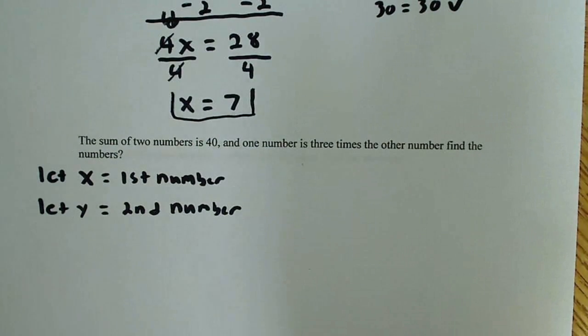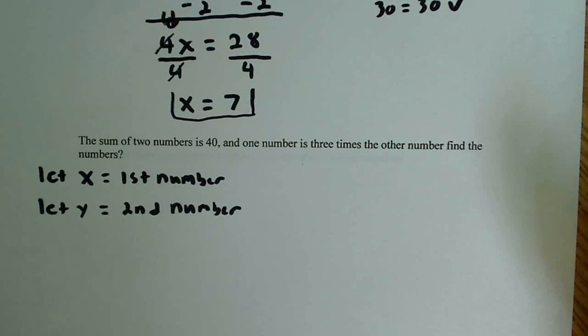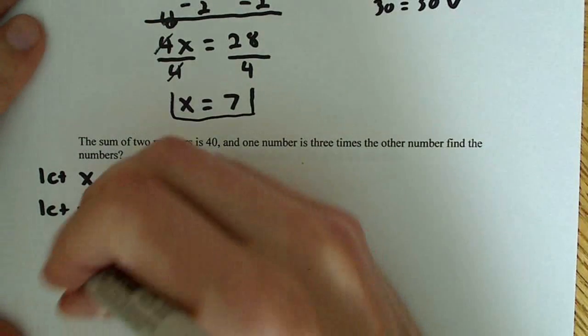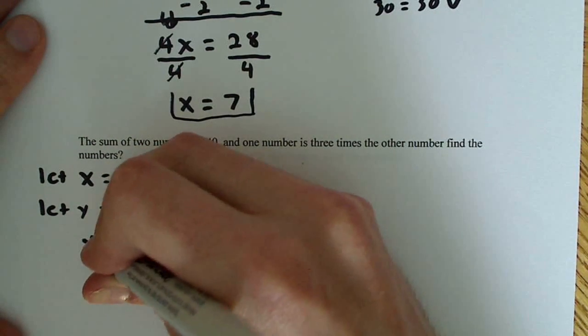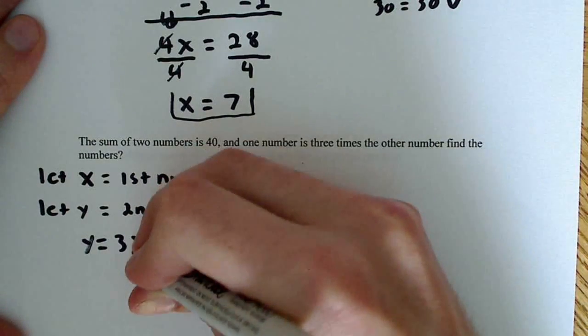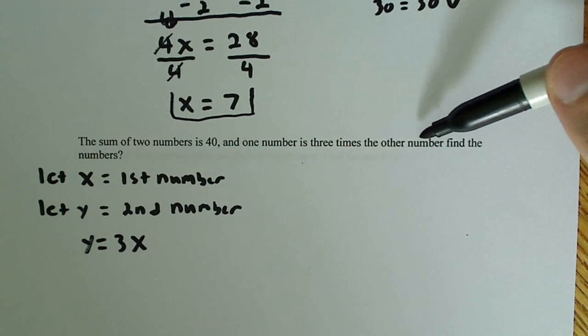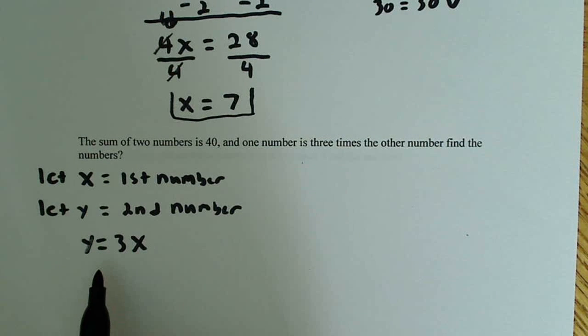We know from the problem that the sum of two numbers is 40, so two numbers means two variables in this case, and it says one number is three times the other number. So for either of these, we can choose to say y, which is how I'll do it, we'll say y is equal to 3x. So one number is three times the other number, so y can also be equal to 3x.